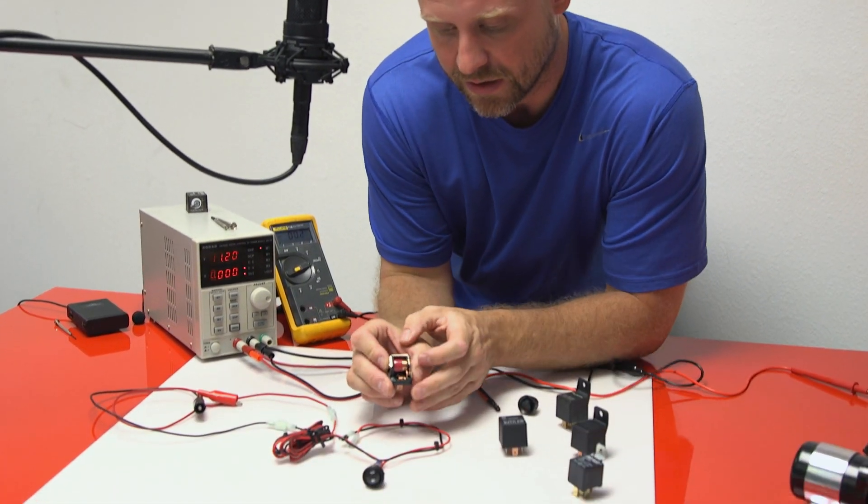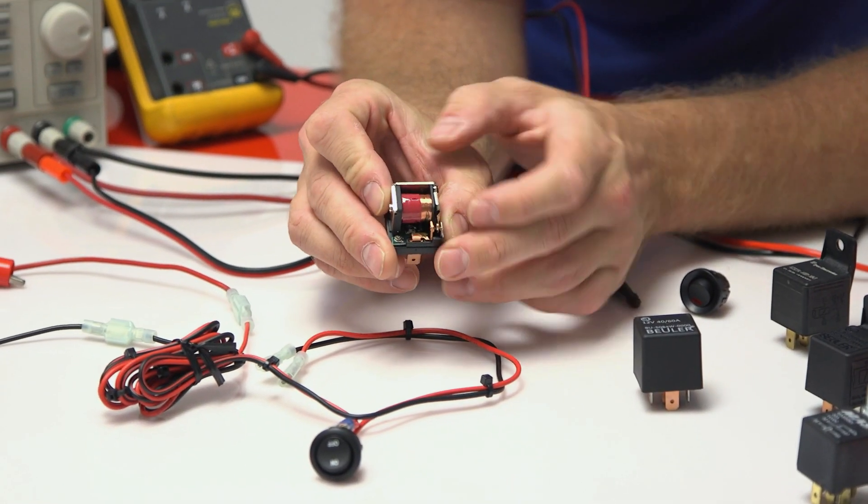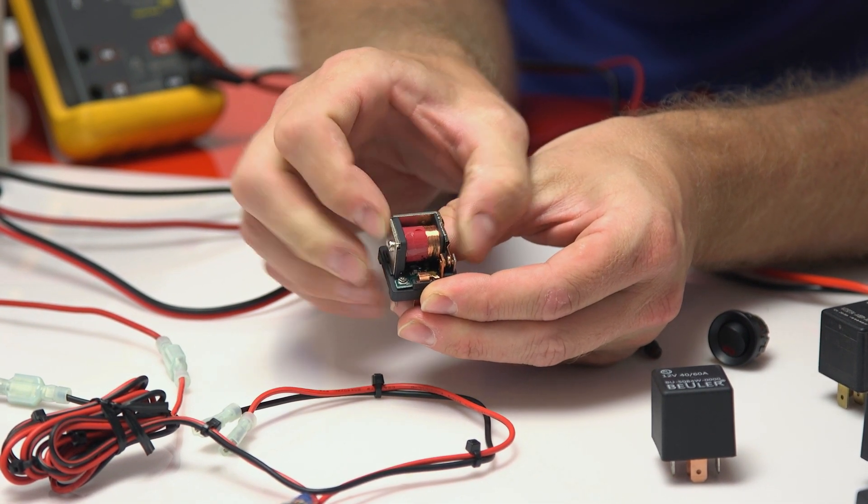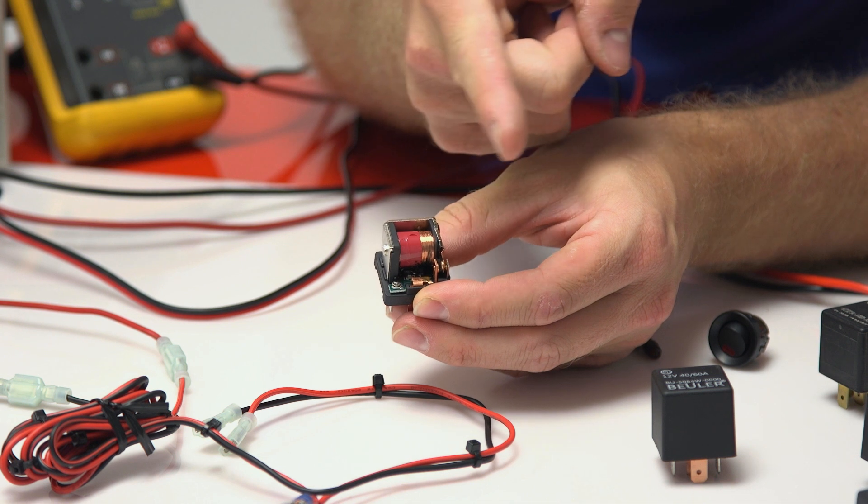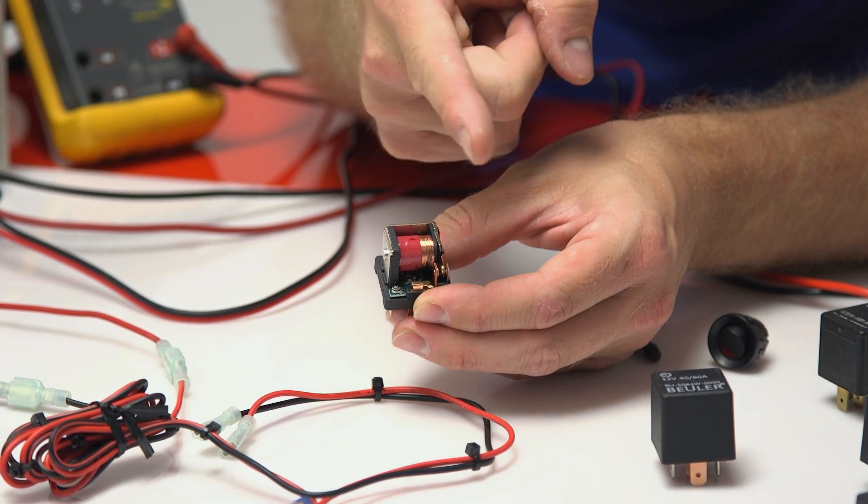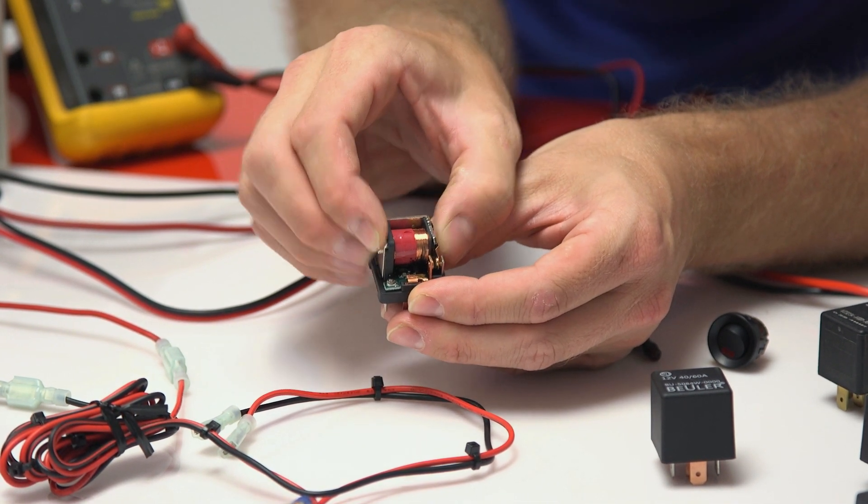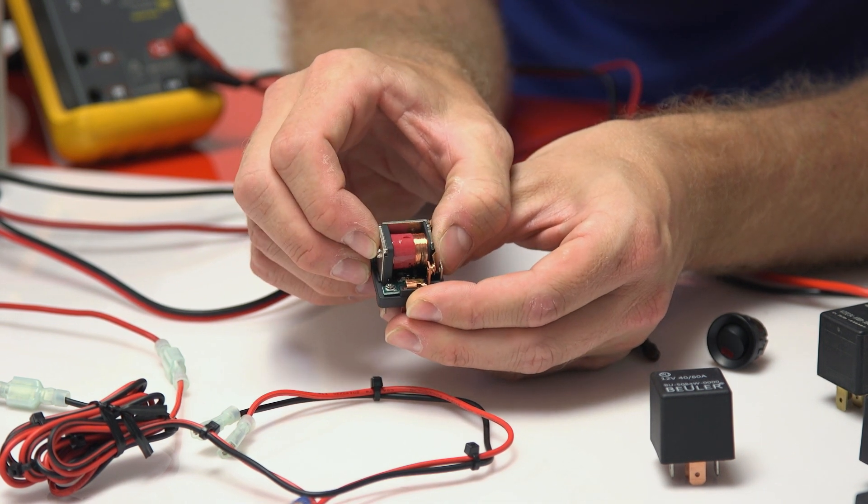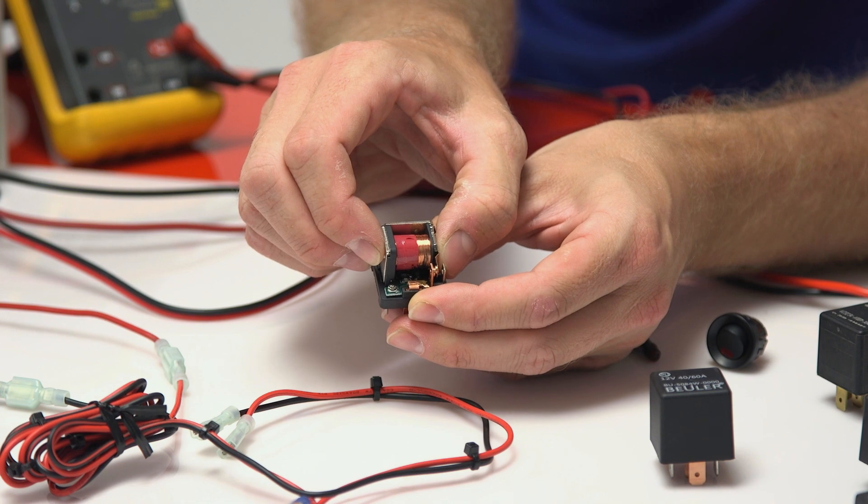The way a relay works is there's an electromagnetic coil that pulls a contact in once the coil is energized, and this is just imagine a little switch or a little piece of copper moving in between two copper rails. So that's how it works and basically electronically this is what ends up happening.